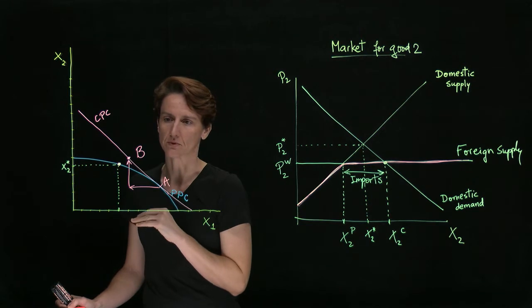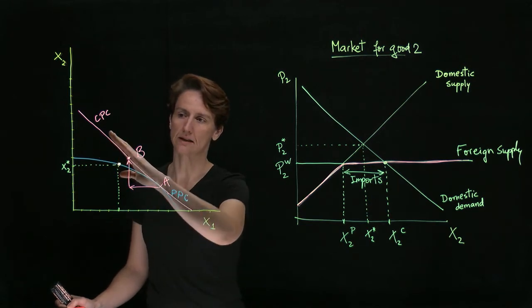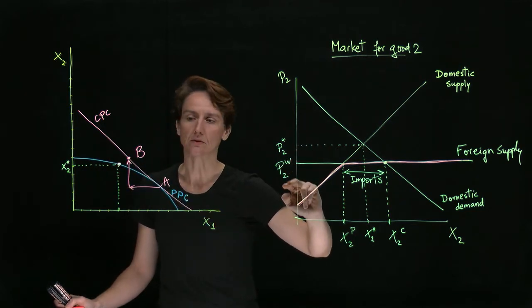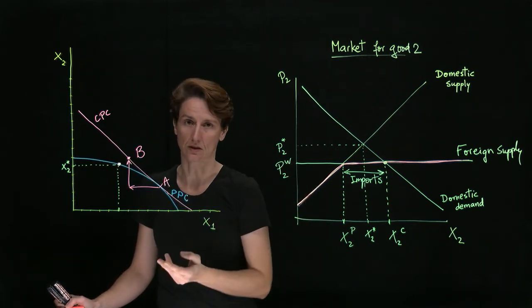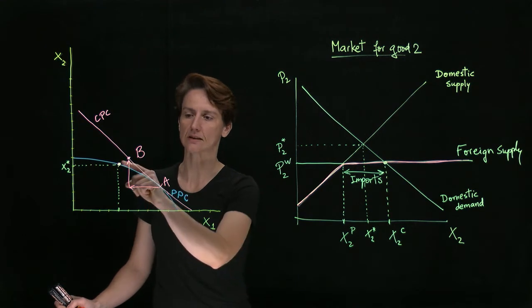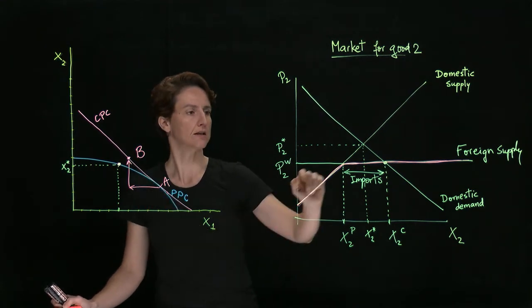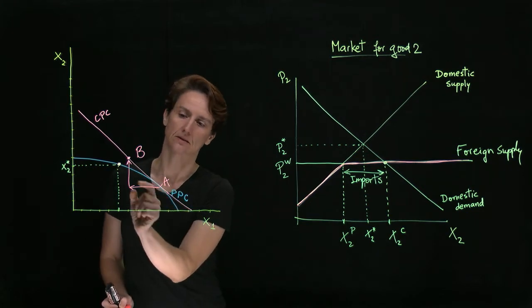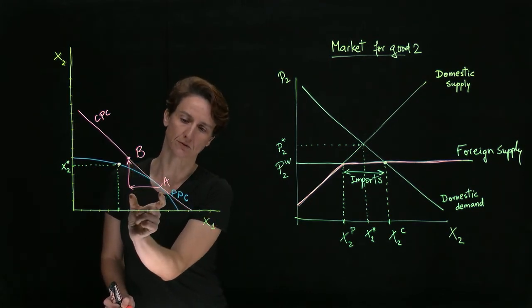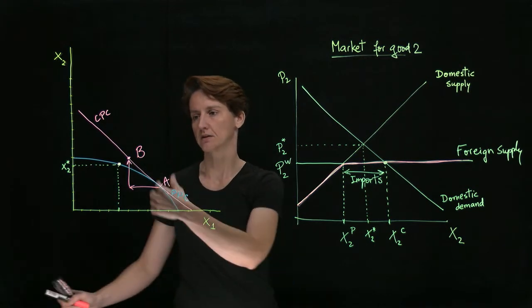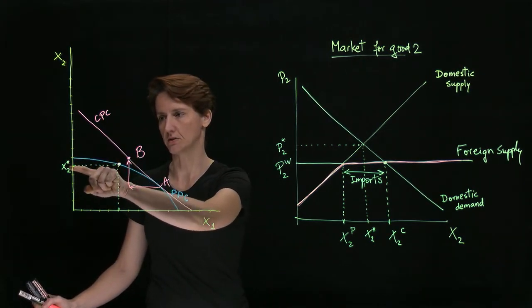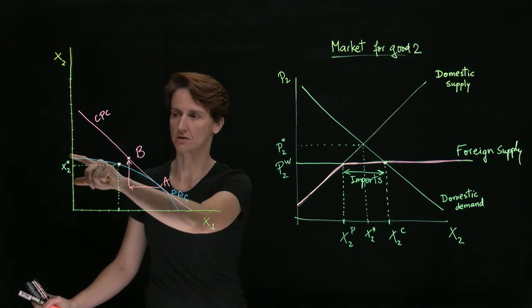When the country opens up to trade, good two is available at a lower price from foreign producers. In other words, P2W is lower than P2 star. Well, then what happens is the country will import some of good two and export some of good one. The amount consumed in that country will increase. We will consume at B, so this will be X2C for consumption.